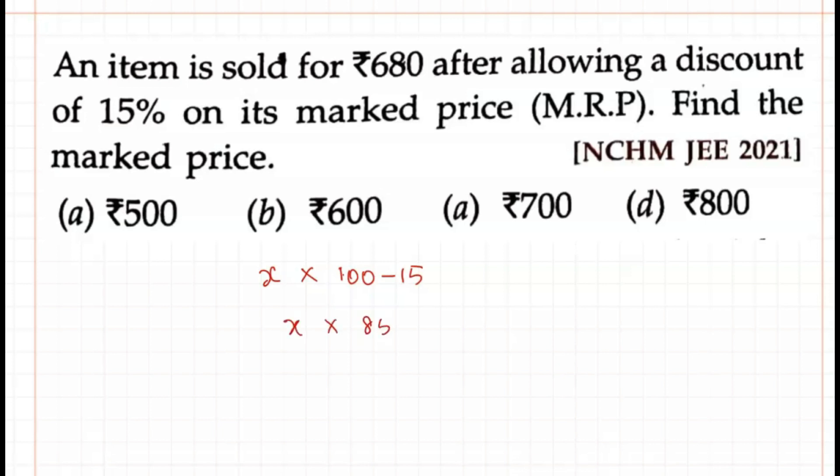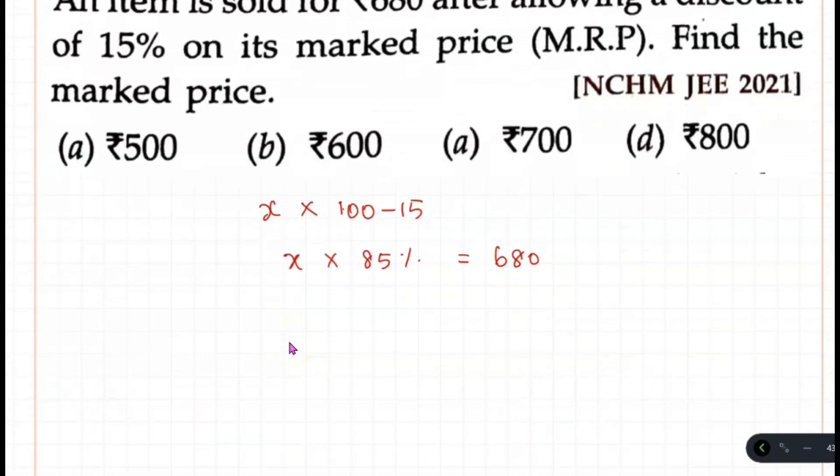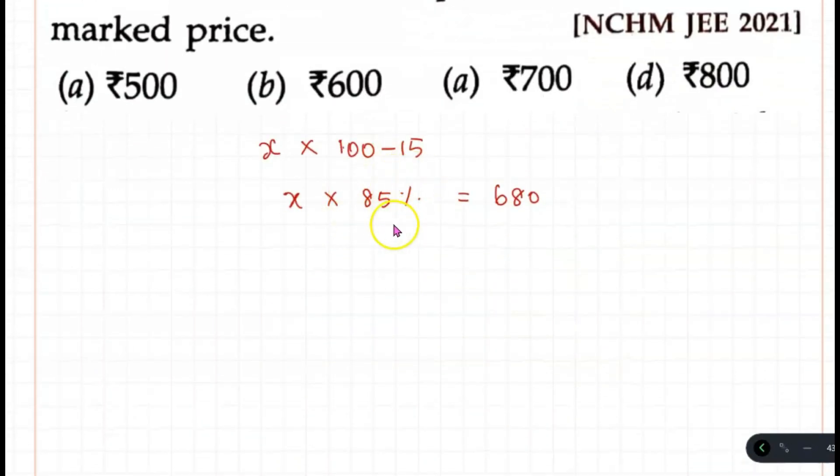So X times 85 percent equals 680. The initial price X times 85 percent, that is the discount, equals 680. This can be written as X times 85 by 100 equals 680.